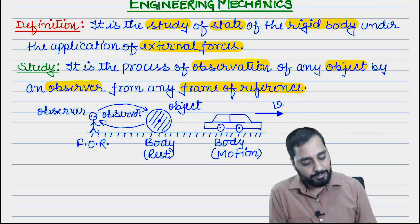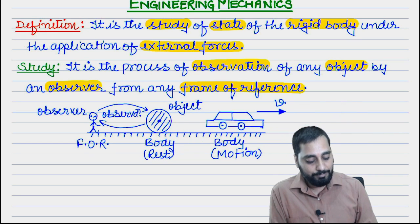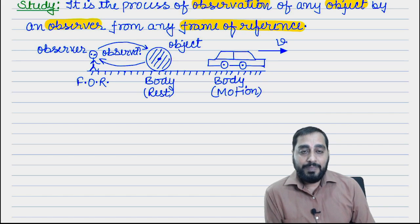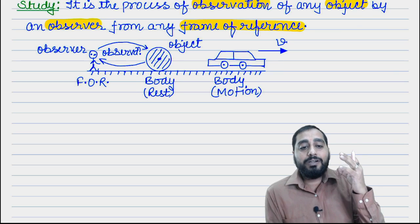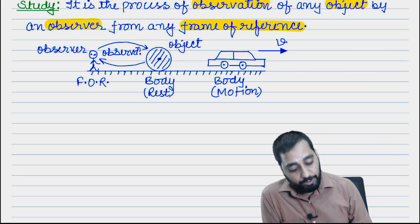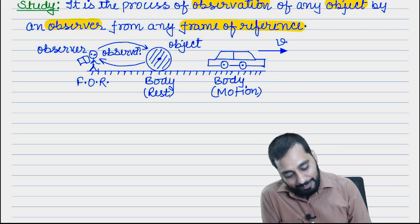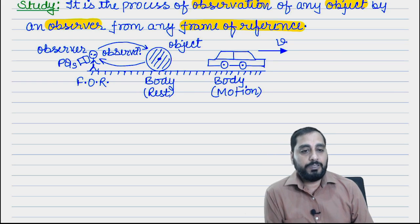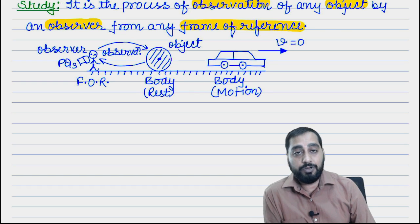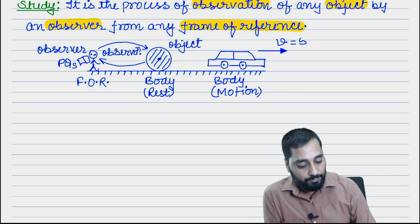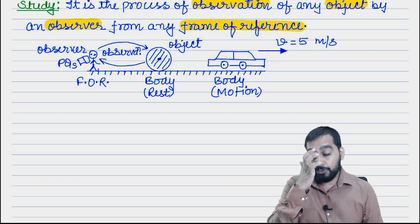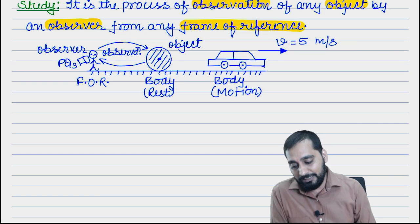There can also be different types of velocity — variable or uniform. The observer will collect information about the body. What will he actually note down in his diary? He will note down the physical quantities. For example, v = 0 means the body is at rest; if he notes v = 5 meters per second, that means the body is in motion. So what he collects are the physical quantities.